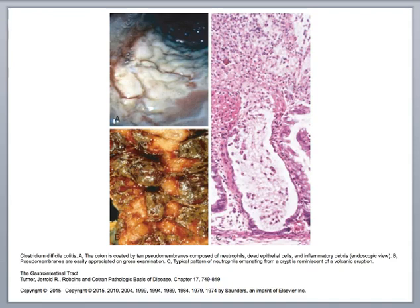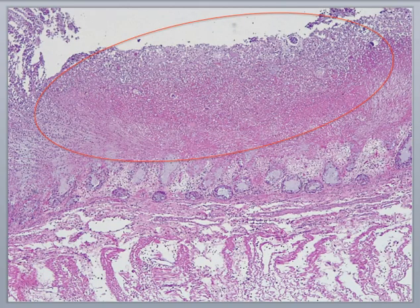Microscopically, a typical appearance shows neutrophils appearing to explode from the crypt epithelium, referred to as a volcanic-type eruption. The pseudomembrane consists of a layer of fibrin, necrotic debris, and neutrophils lying on the surface of the mucosa. All that remains recognizable of the mucosa is the layer of the crypt bases.